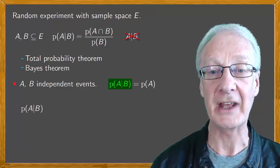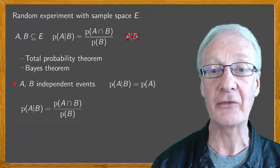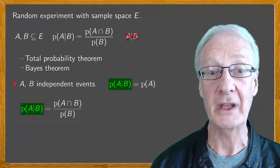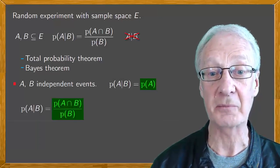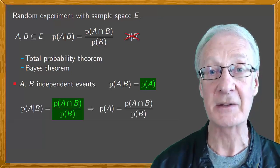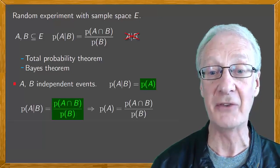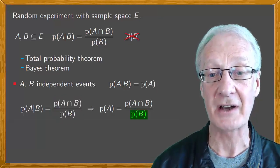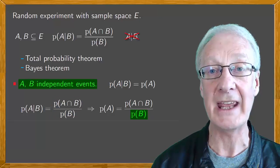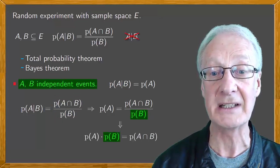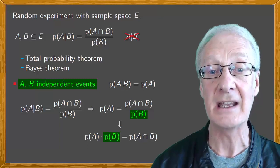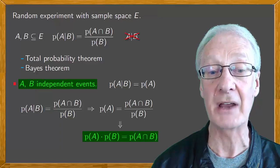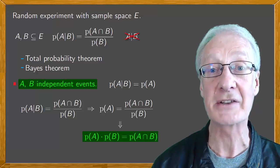On the other hand, we know that the probability of A conditional on B is the probability of the intersection divided by the probability of the second event. So, equating the two values, we obtain that the probability of A is the probability of A intersection B divided by the probability of B. Moving PB to the other side, we obtain that when A and B are independent events, the probability of A intersection B is the probability of the product, an expression that we already know and is defined by the two independent events A and B.